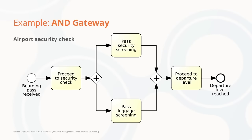Let's put the AND gateway in context through an example. Let's consider the security check at an airport. This process starts once a boarding pass has been received, after which we proceed to the security check. Here there are two activities that we can do in parallel: as a passenger, we have to pass the security screening, and on the other hand, our luggage itself has to go through the screening.